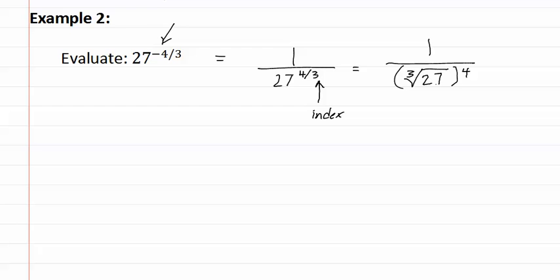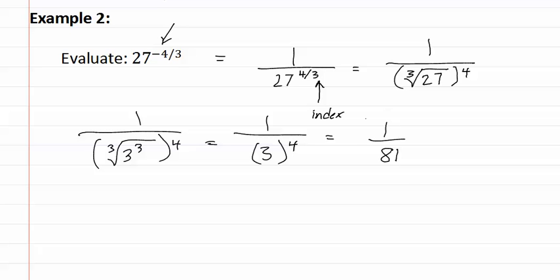Now, we do the cubed root of twenty-seven, remembering that twenty-seven is three to the third. This gives us three to the fourth with a one, because the cubed root of three to the third is three. Three to the fourth is eighty-one, so this gives us our answer of one over eighty-one.